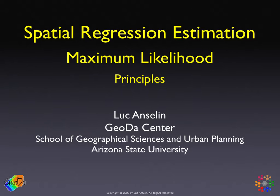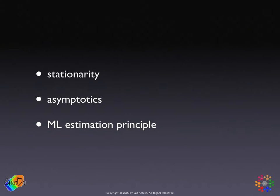In this first section, we'll deal with the principles of maximum likelihood, and specifically, we'll go over a number of very important underlying assumptions. First, we'll cover the notion of stationarity, which is a notion of equilibrium, absolutely necessary to carry out cross-sectional analysis. Then we'll move on to the concept of asymptotics, which deals with how the properties of estimators and test statistics change as the sample size moves to infinity. And finally, I'll give a brief overview of the principle of maximum likelihood estimation.